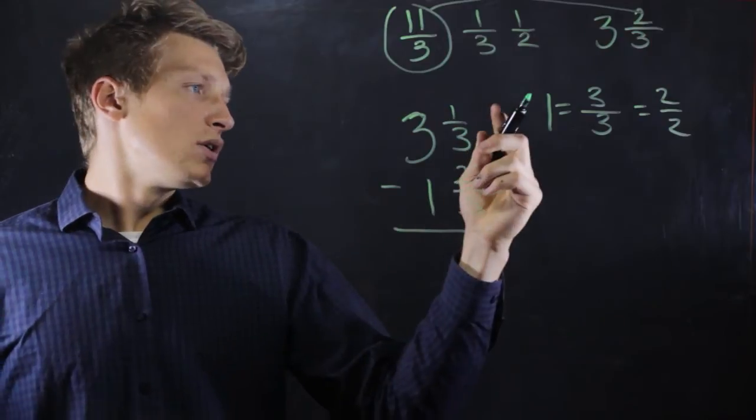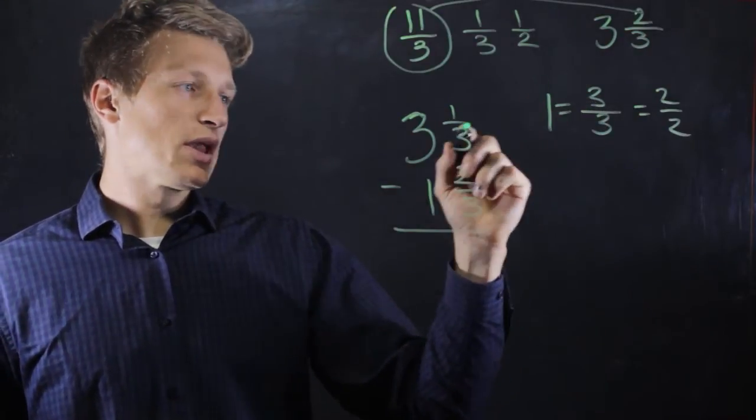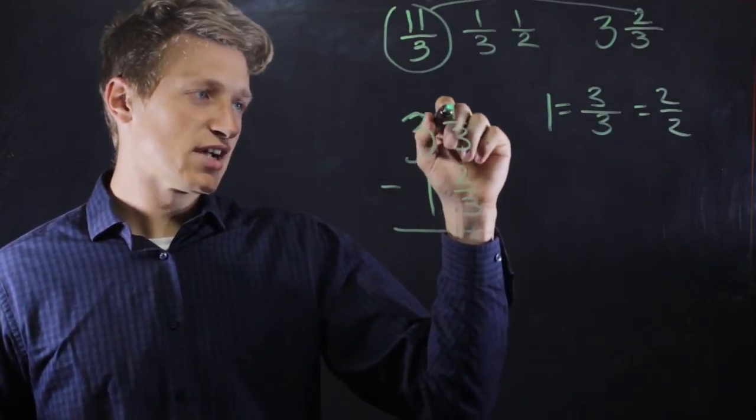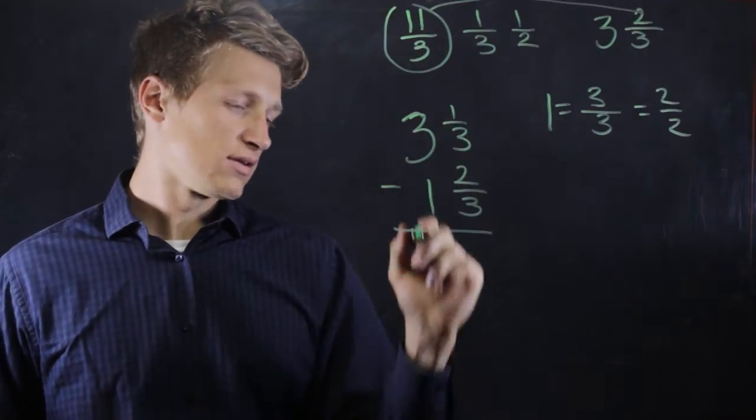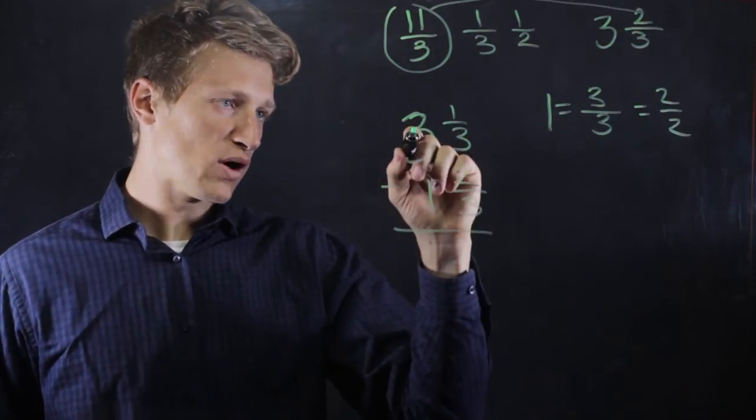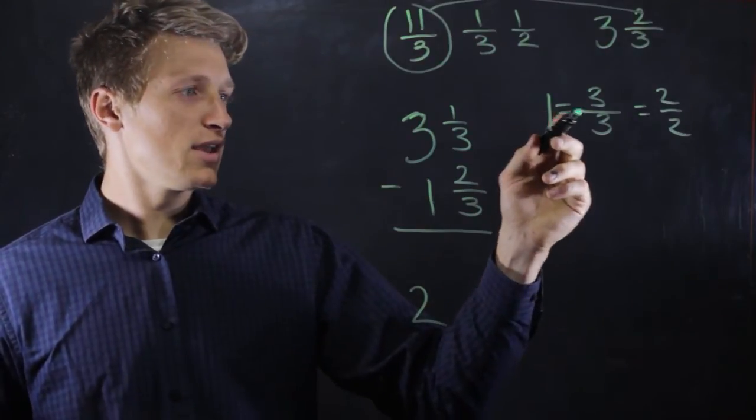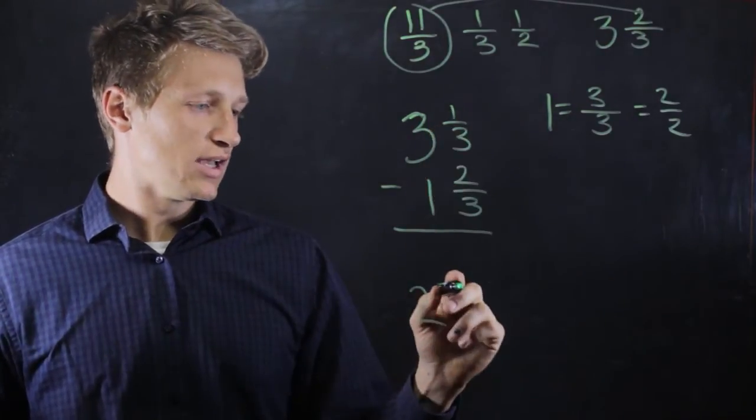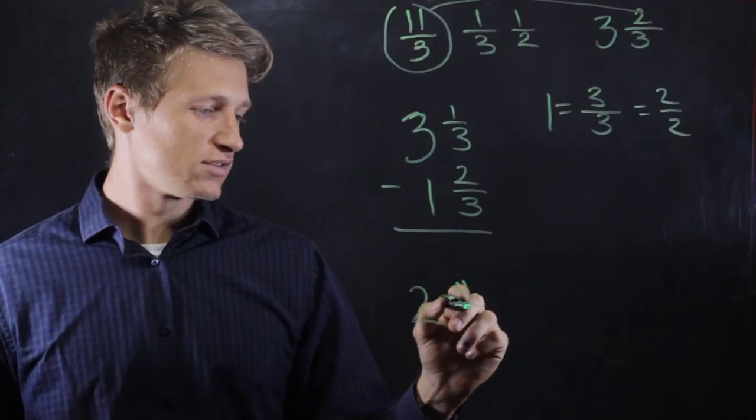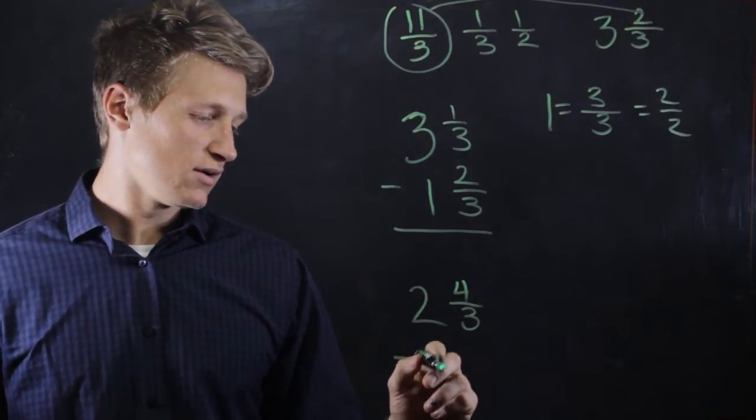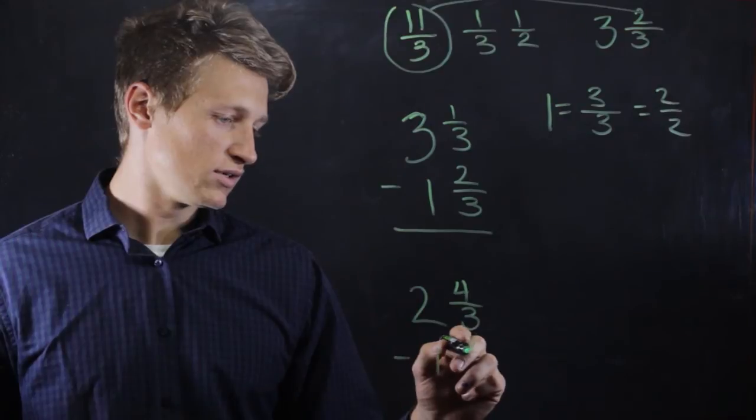So let's change it to 3 over 3, and then we can add it to this fraction here. Let's see, let's rewrite it. So if we borrow 1 from here, we will get 2. We add 3 to this, we get 4 thirds, and we'll have the same down here, 1 and 2 thirds.